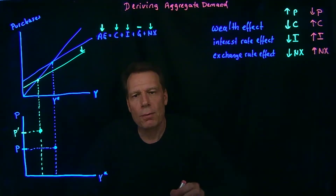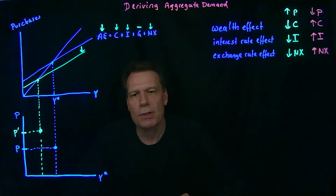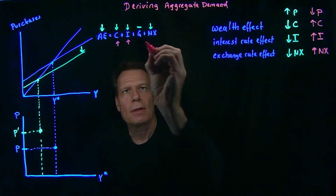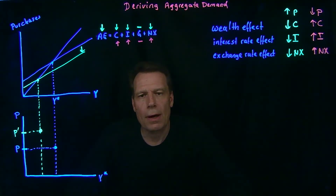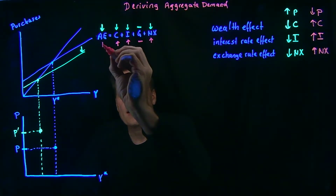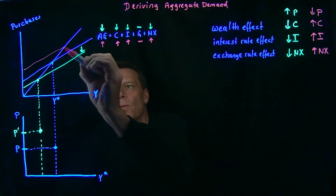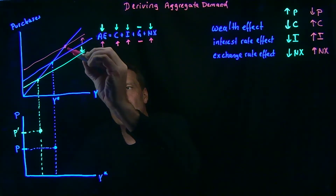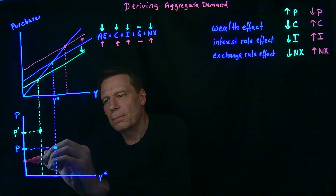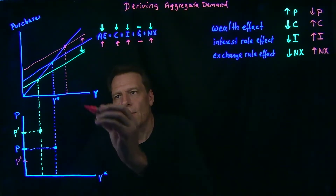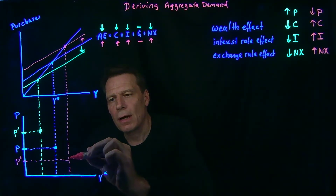Now suppose the price level falls from the original. When the price level falls, consumption increases, investment increases, and net exports increase — so each of those components of aggregate expenditure increase. We'll hold government purchases constant since they're exogenous. This means aggregate expenditures rise, and the whole aggregate expenditure line shifts up. As it shifts up, we get a new intersection with the 45-degree line at a higher level of GDP. So at this lower price level, P'', equilibrium GDP increases — giving us a third point on our aggregate demand curve.